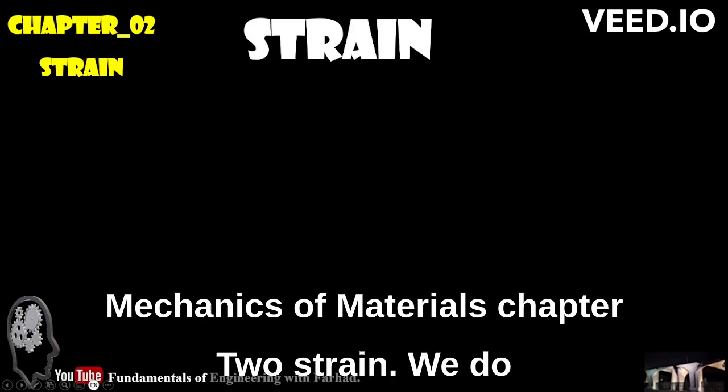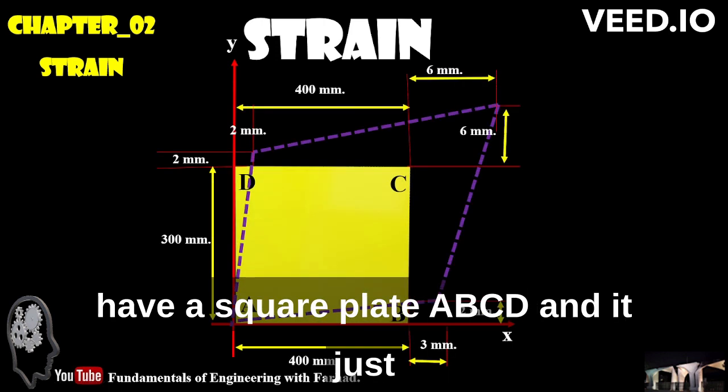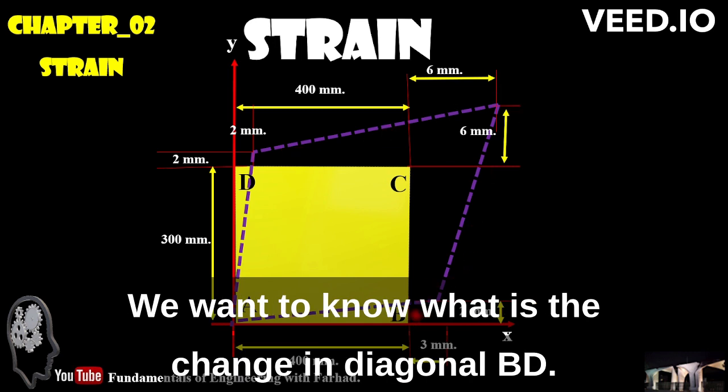Good evening everyone. Mechanics of Materials, Chapter 2, Strain. We have a square plate A, B, C, D, and it deformed to these dashed purple lines. We want to know what is the change in diagonal B, D.